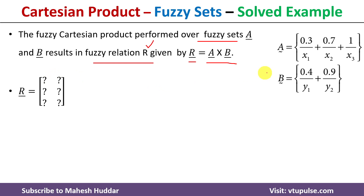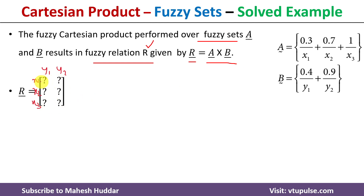The number of rows and columns can be identified from the number of members in each fuzzy set. Fuzzy set A has three members — x1, x2, x3 — so x1, x2, x3 will be the rows. Fuzzy set B has two members — y1 and y2 — so there will be two columns. The next question is how to calculate the values at positions x1y1, x1y2, x2y1, and so on.